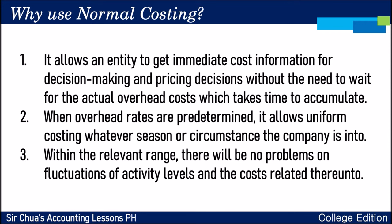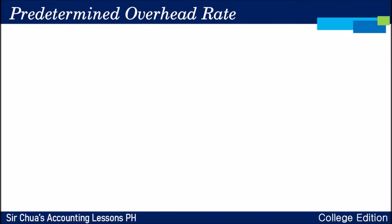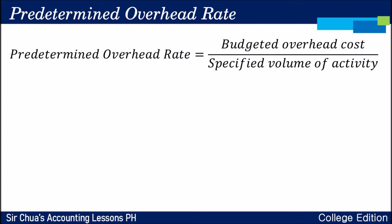But remember, what we report in financial statements under generally accepted accounting principles is the actual cost of the product. So later, we'll learn how, even starting from normal costing, we can still arrive at the actual cost of products. A company uses a predetermined overhead rate to apply overhead to production. The predetermined overhead rate comes from the budgeted overhead cost of the company for the period divided by the specified volume of activity expected for the period.